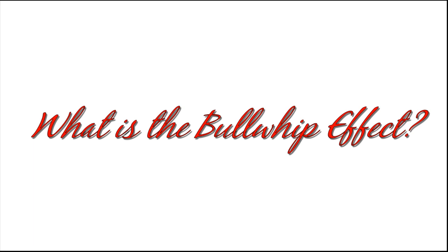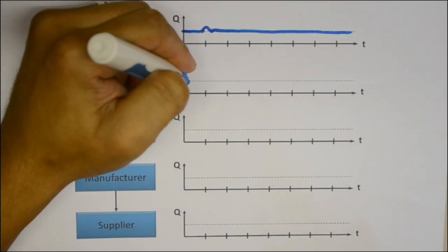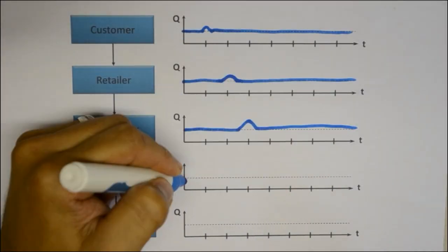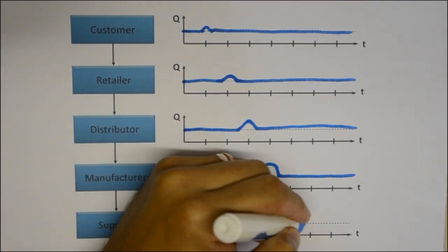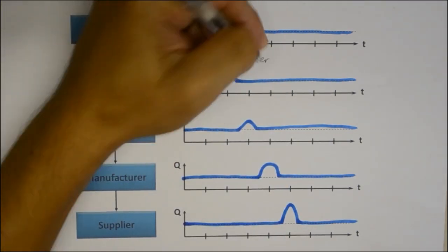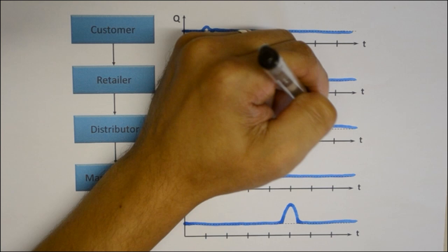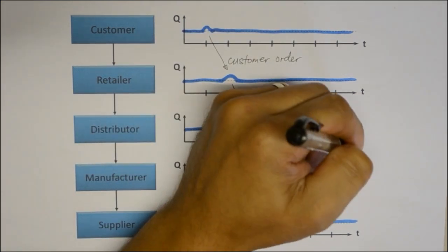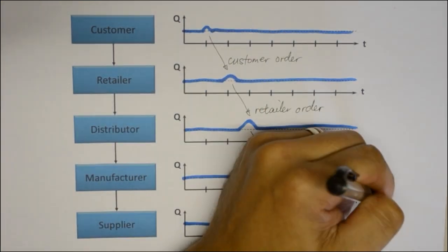What is the bullwhip effect? The bullwhip effect is the unexpected distortion of the supply chain caused by repetitive variation in demand. The unplanned demand from retailer oscillates back to the distributor and finally to the supplier, magnifying through each level of the supply chain.